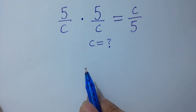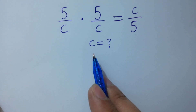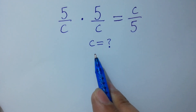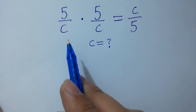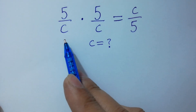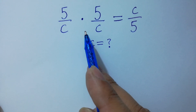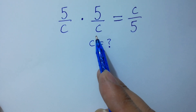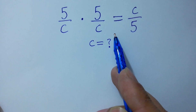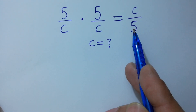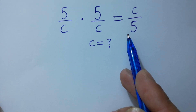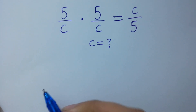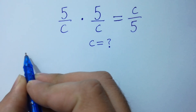Hello friends. Find the value of c if (5/c) × (5/c) equals c/5. Let's have a solution.